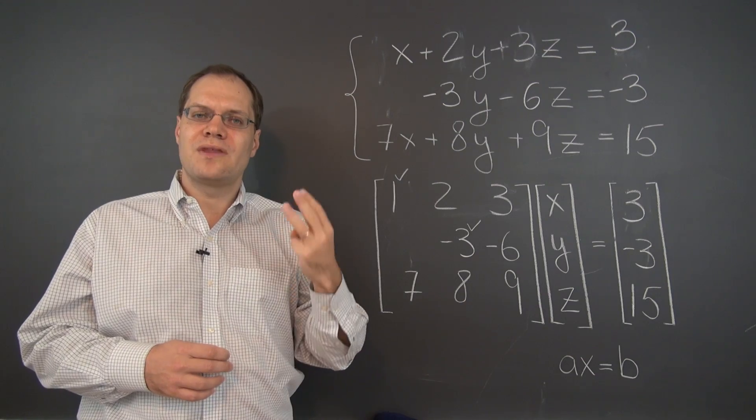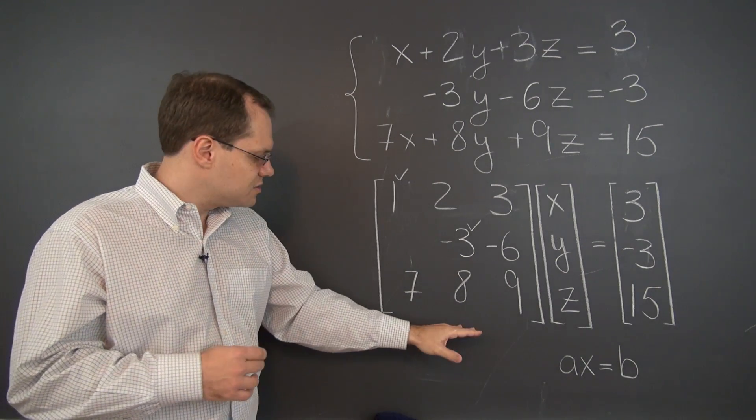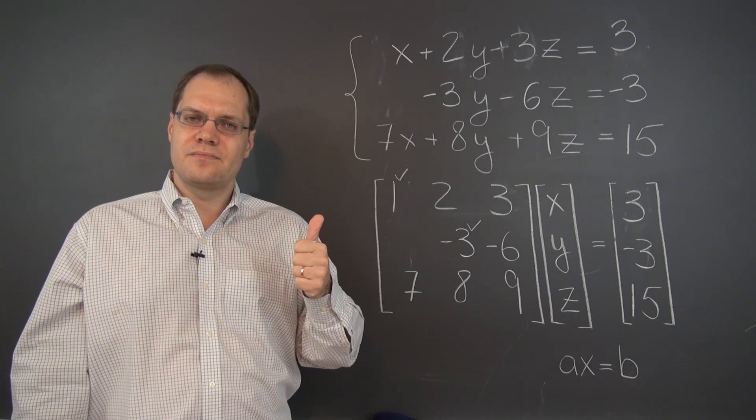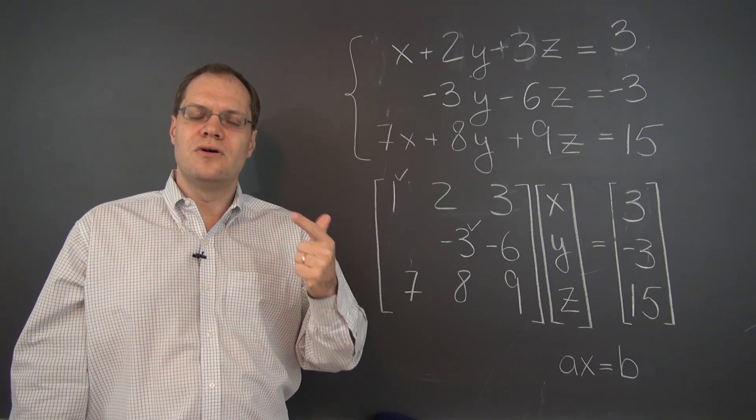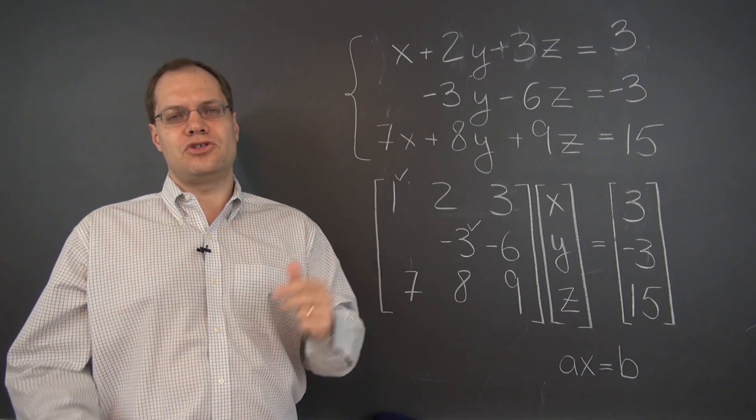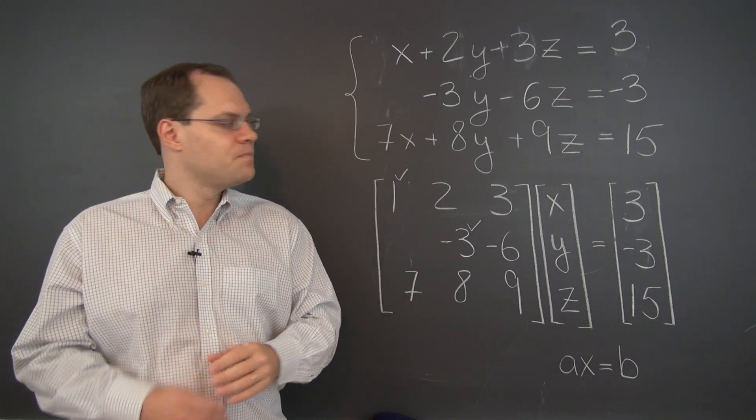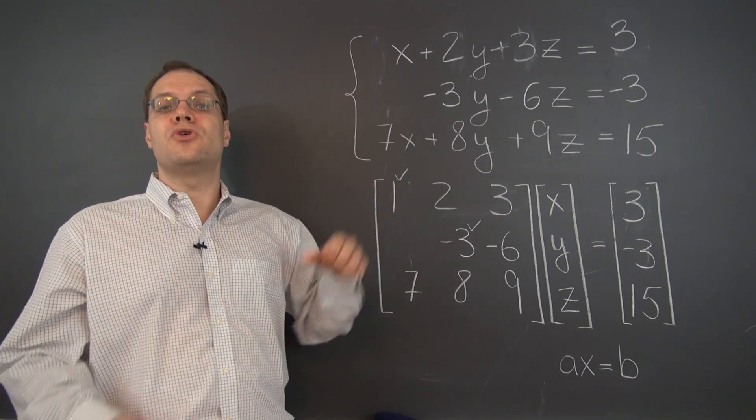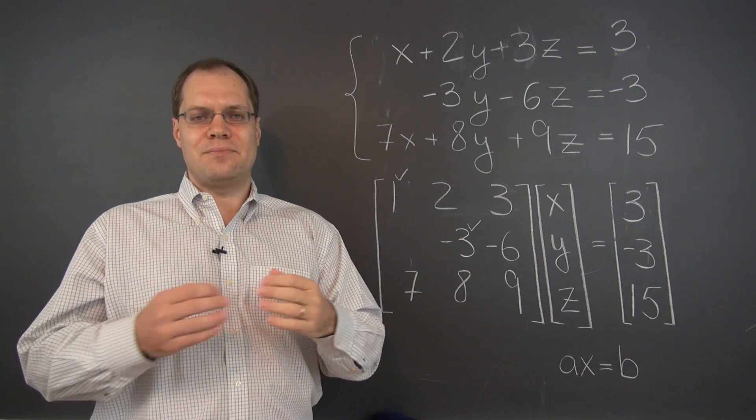So there you go. There are three Gaussian elimination operations, which we can, inspired by the matrix perspective, call the row operations. One, adding a multiple of one row to another. Two, multiplying a row by a number. And three, switching rows. So those are the only three things that you can do in trying to eliminate as many entries as possible. So those are the rules of the game. Everything else is experience and practice.